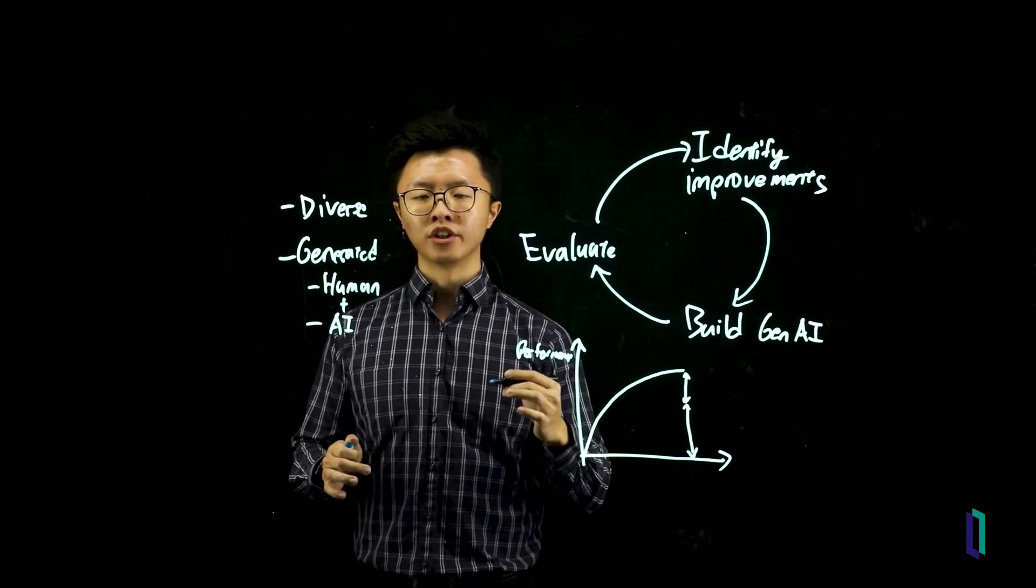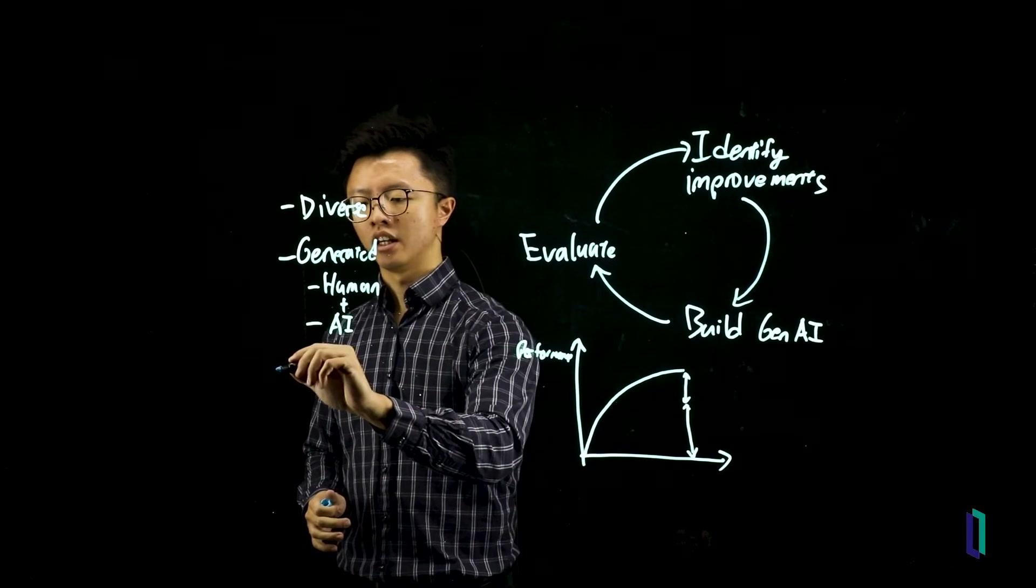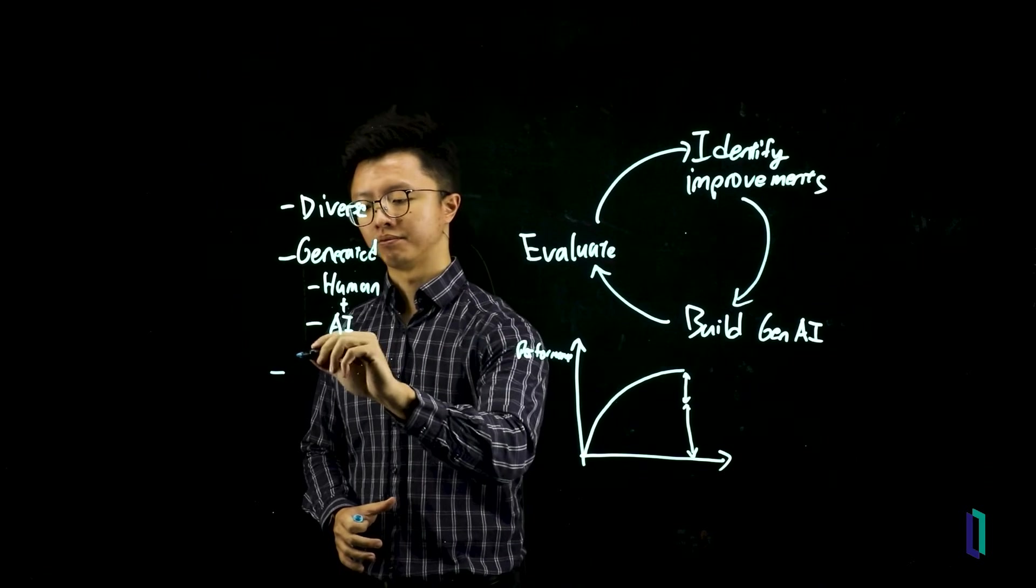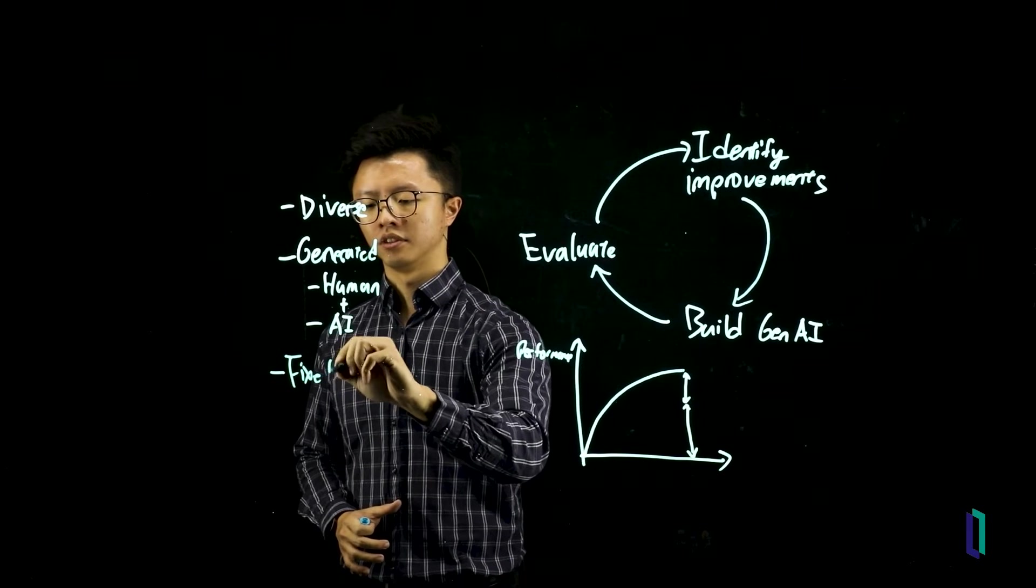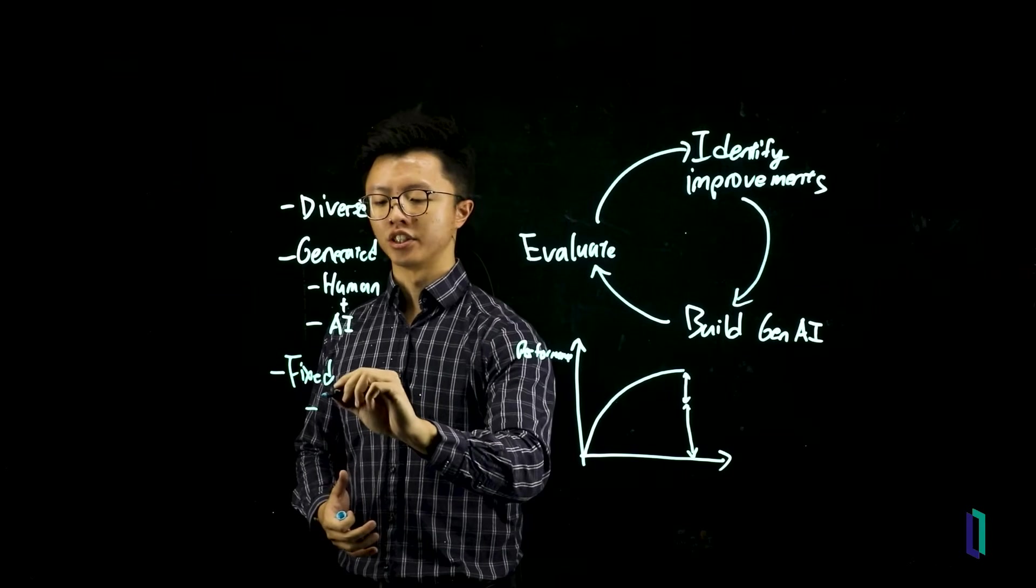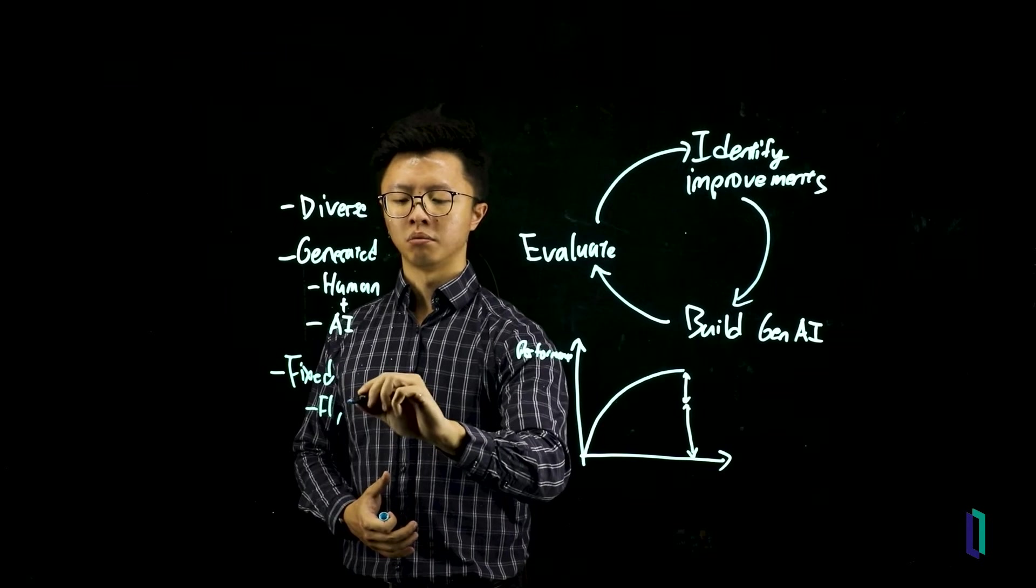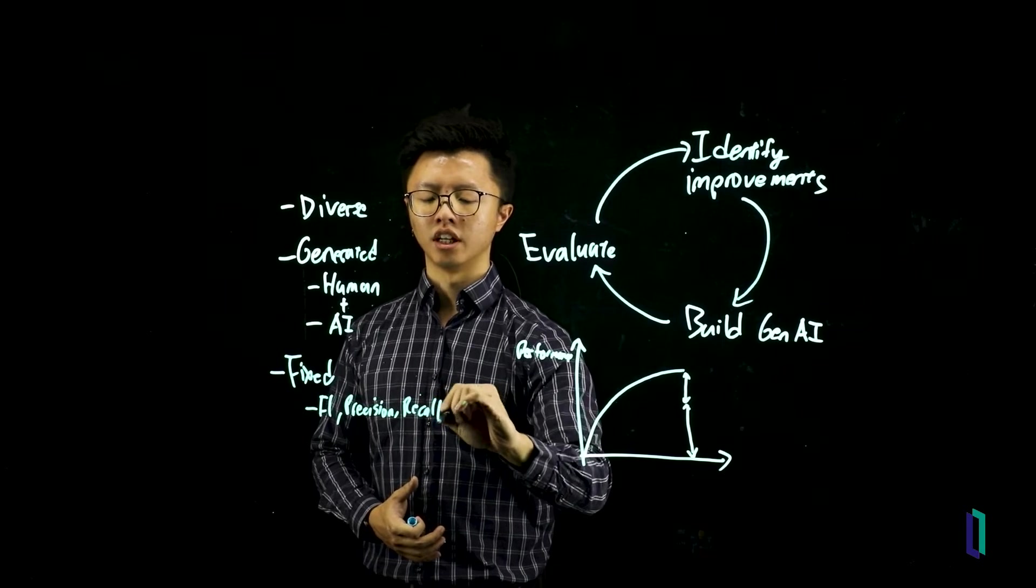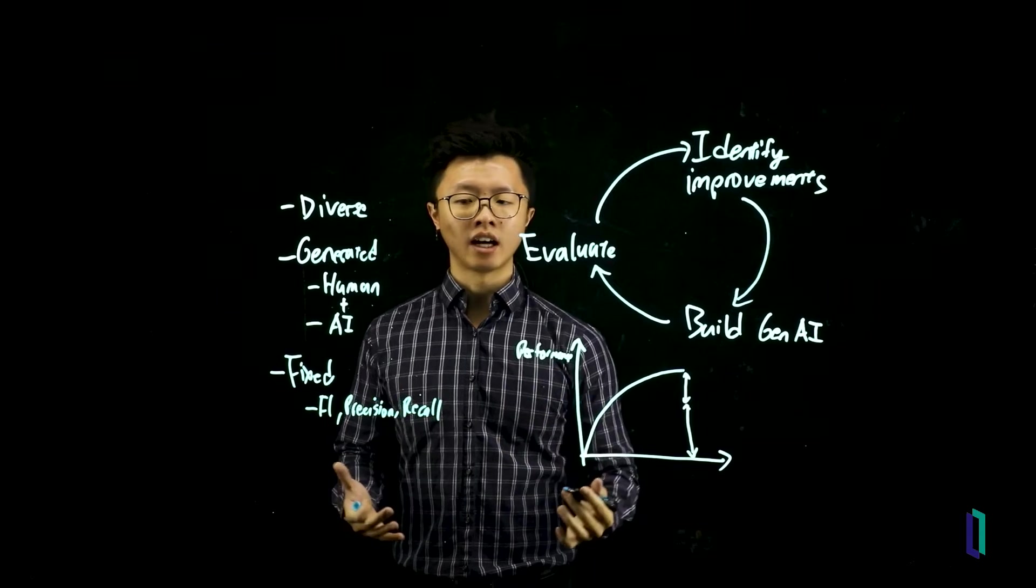Now, when it comes to understanding your metrics, if your Gen AI system has a fixed answer, you would use your traditional machine learning metrics, such as your F1 score, precision, recall, and so on.